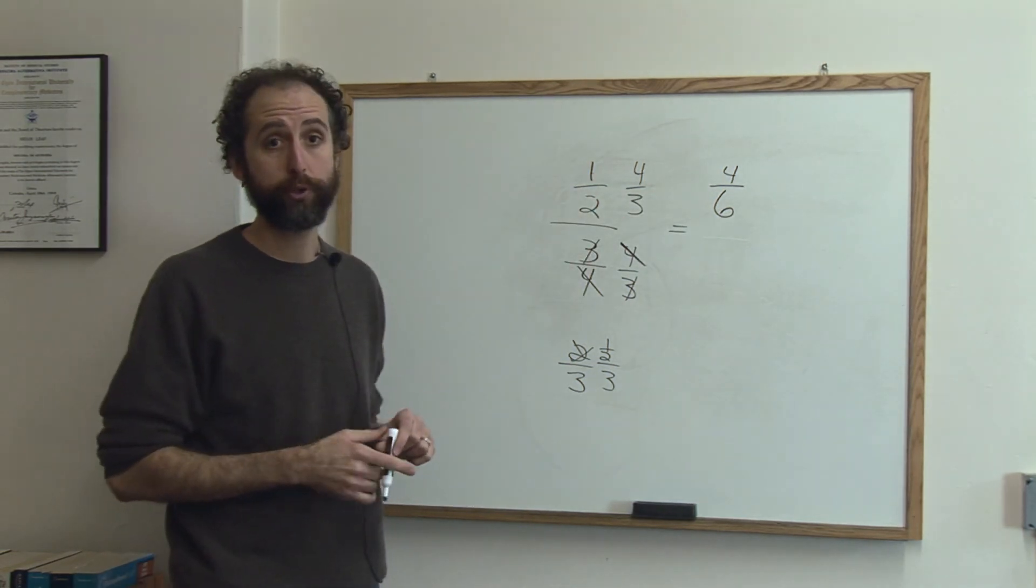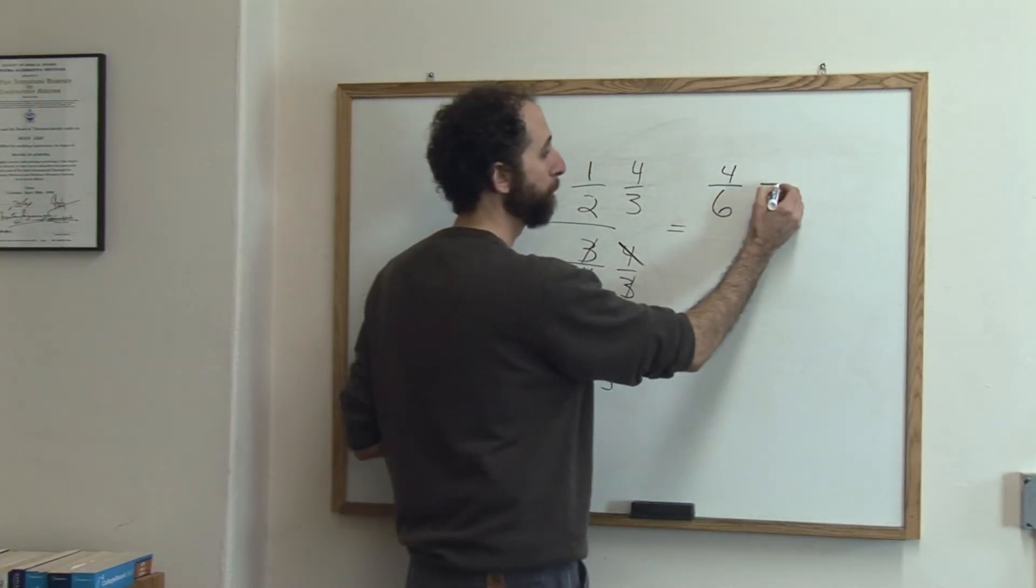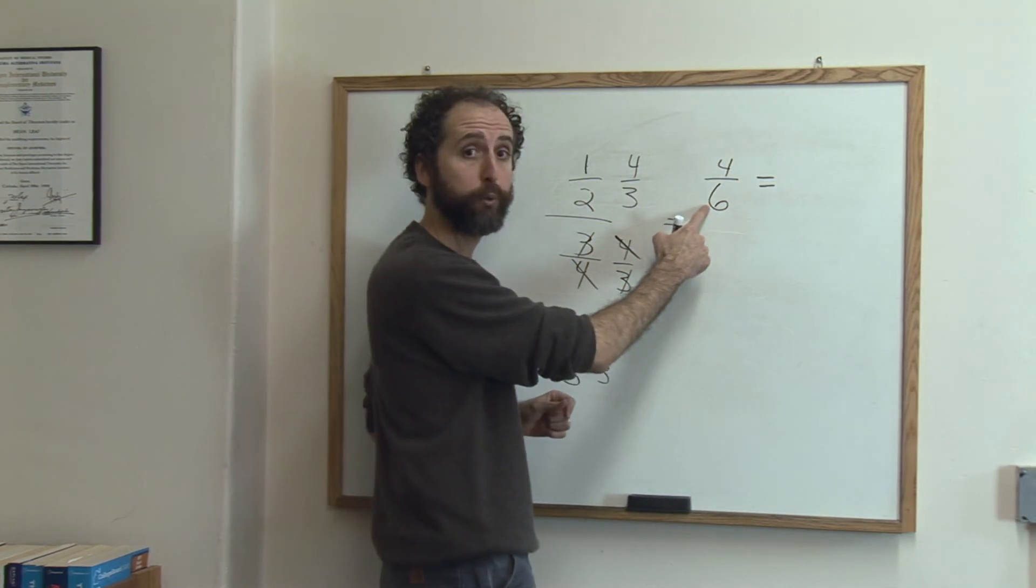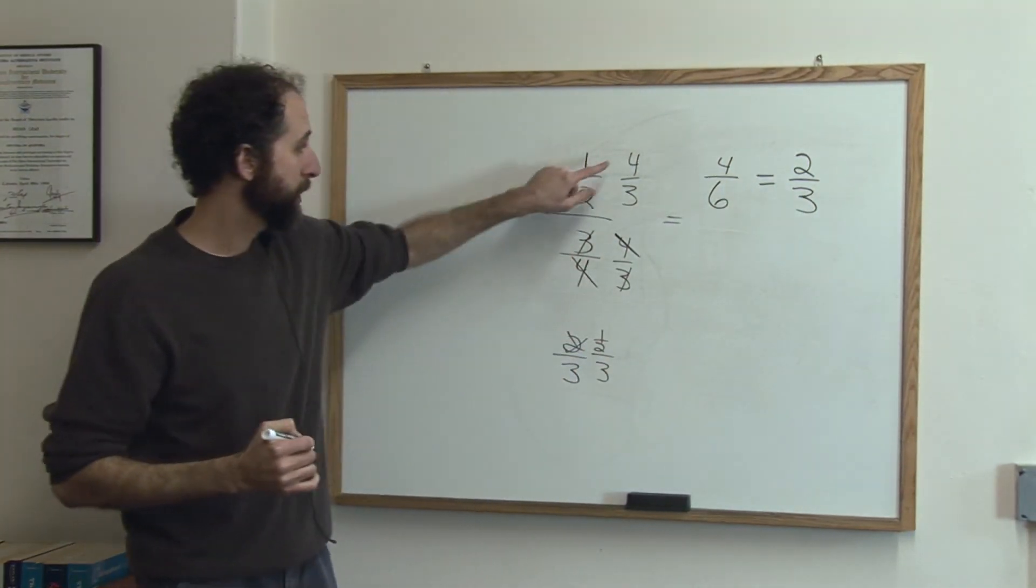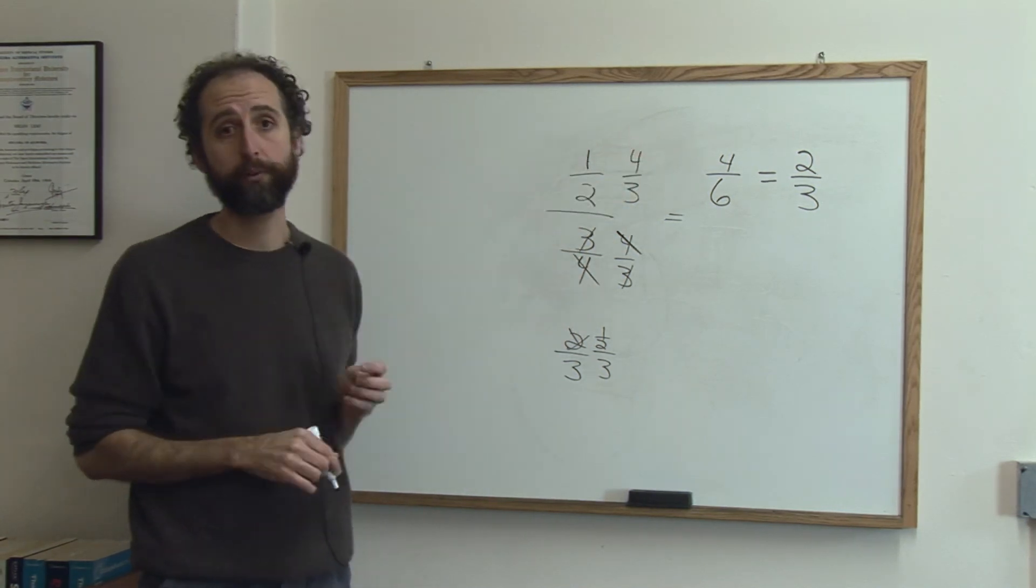And of course, any time you can reduce, you should. So 4 sixths, you can divide the top and bottom by 2, and that's why we get 2 thirds. If I had cross-canceled way back here, that would have saved me an extra step.